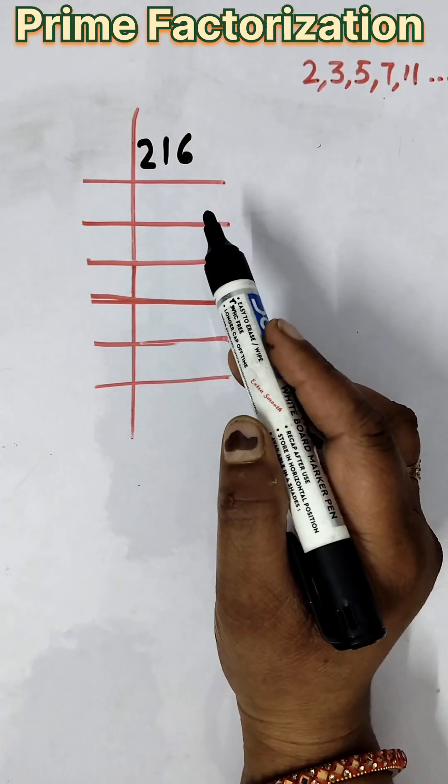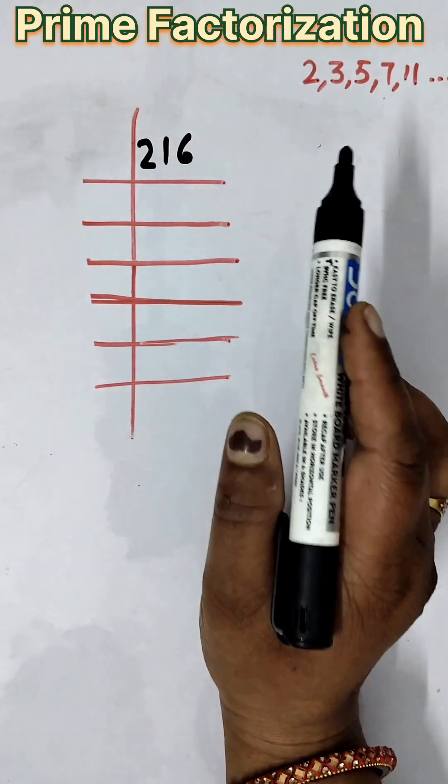So here, we are going to find the prime factorization of 216. So first, we will know what the prime numbers are.